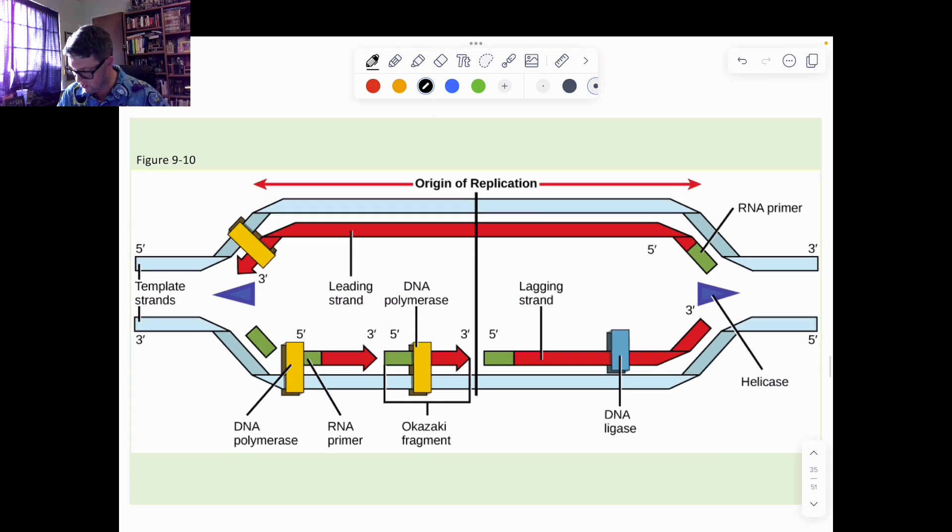In terms of a picture, it would look something like this. Although this picture, which came from your textbook, for the sake of saying it's wrong - and the way I would point out that it is wrong is this chunk up here is actually what we would call a lagging strand.